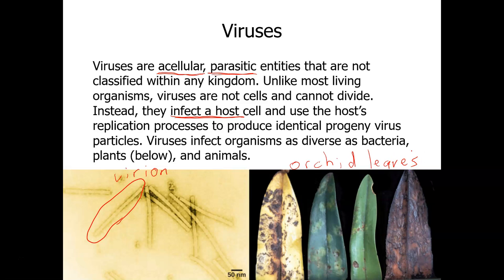The tobacco mosaic virus can infect plants other than tobacco. It was found first in tobacco, but we know it can infect tomato plants and orchids, among many others. These are some of the symptoms you see here: brown spots, a yellowing leaf. Some leaves have spots while still green; one has turned very dark with just a few green spots left; and one has basically just shriveled, turned black, and died.